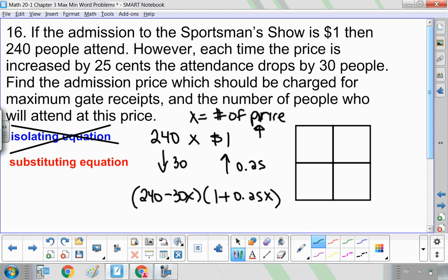So let's tidy this up by applying the distributive property. So I do 240 times 1 plus 240 times 0.025, negative 30X times 0.025. So that's negative 7.5X squared.